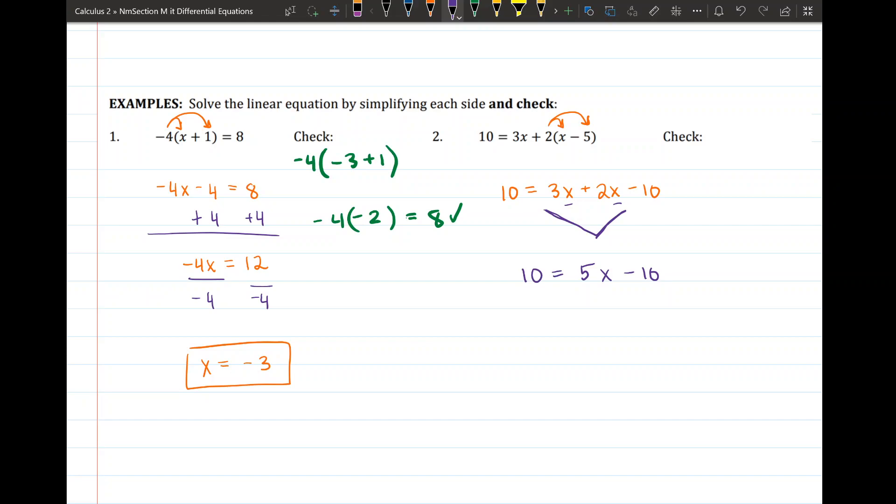You can add 10 to both sides. 20 is equal to 5x and the last step is divide by 5. X is equal to - whoops that's right x on the left - x is equal to 20 divided by 5 is 4.